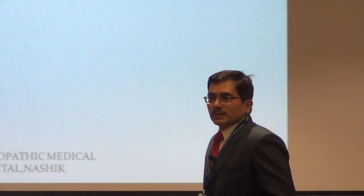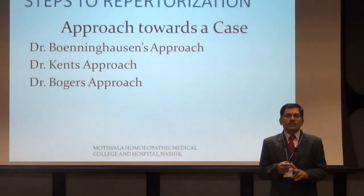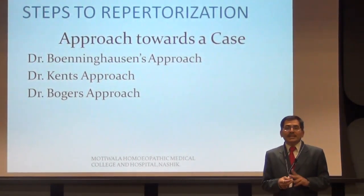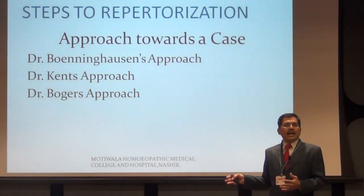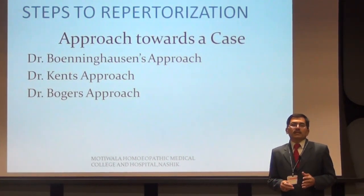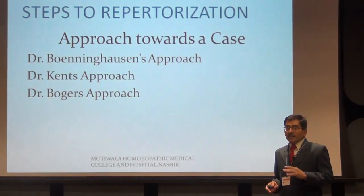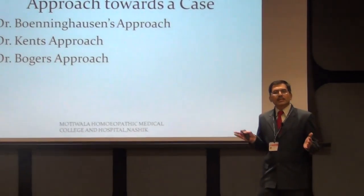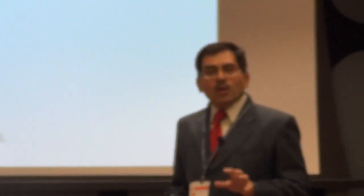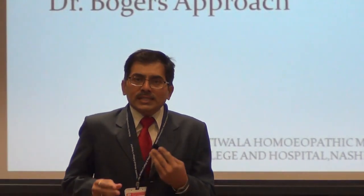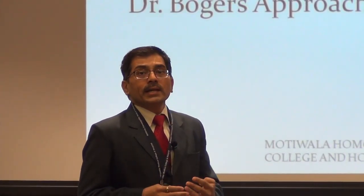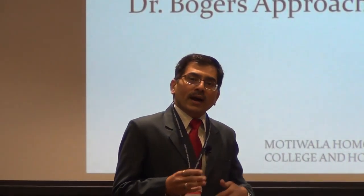Dr. Boger, while constructing his repertory, took the basics of Boenninghausen but also did not neglect Kent — he gave importance to mental symptoms as well. What Boger added was the philosophy of Boenninghausen plus Kent, plus his own philosophy — adding pathological generals, rubrics, time modalities, and causation in a more particular and refined way.